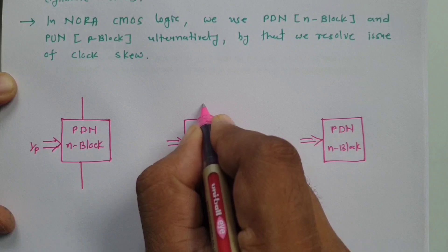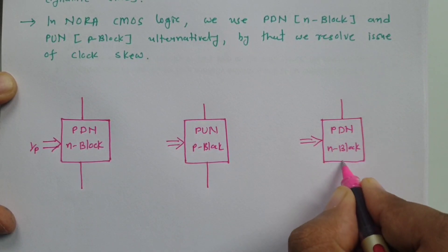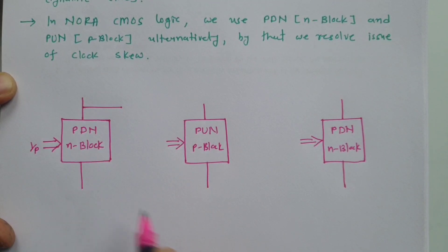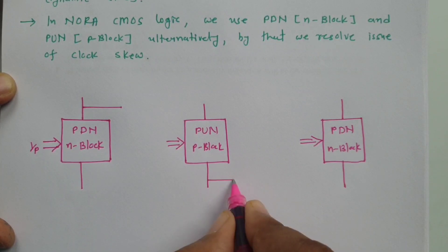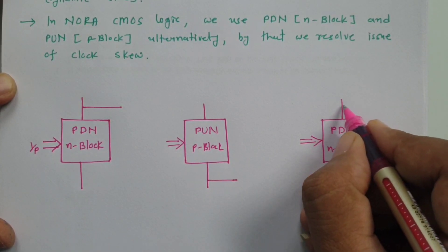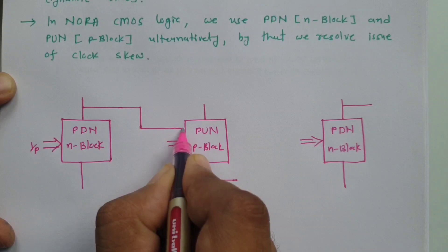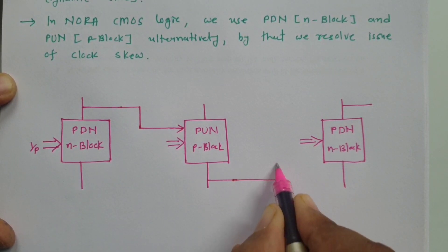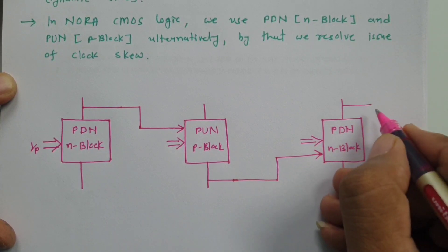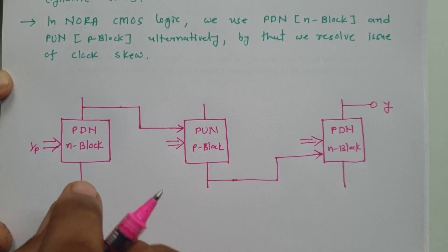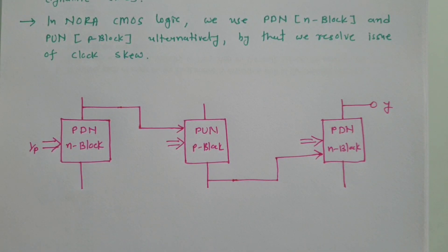By giving different inputs, we can have performance of a Boolean expression. With the pull-down network of the N block, we take output from one terminal, and with the pull-up network of the P block, we take output from another terminal. The output of one block is given as input to the next block, and at last we have the final output. By having this alternating connection of pull-down and pull-up networks, we avoid the issue of clock skew. There are some further connections to understand regarding the gated clock.